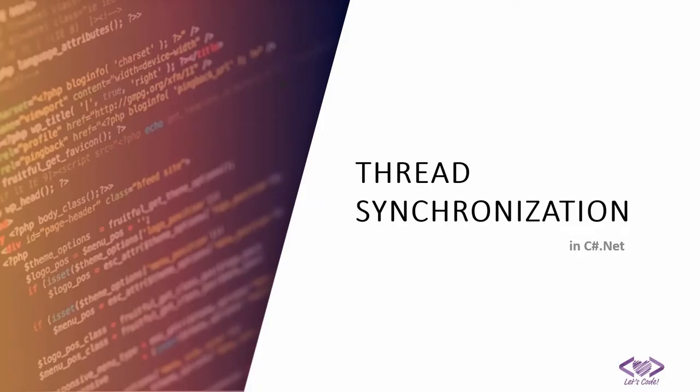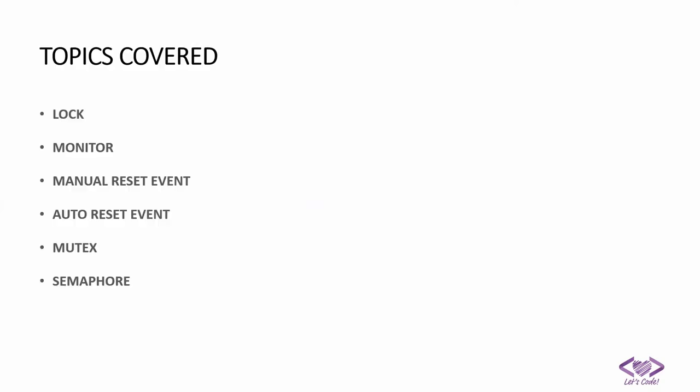Hi friends, welcome to a new video of Codeligent. In this video we will see thread synchronization methods used in C# .NET. There are multiple ways we can synchronize threads, and the topics we'll cover are: lock, monitor, manual reset event, auto reset event, mutex, and semaphore.